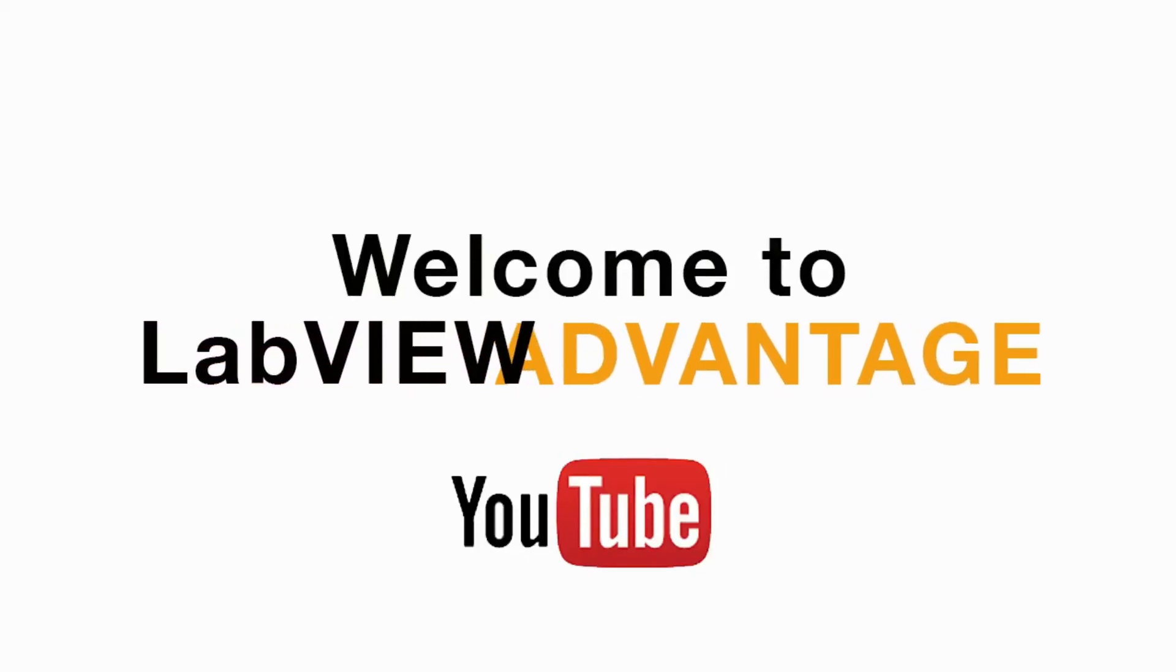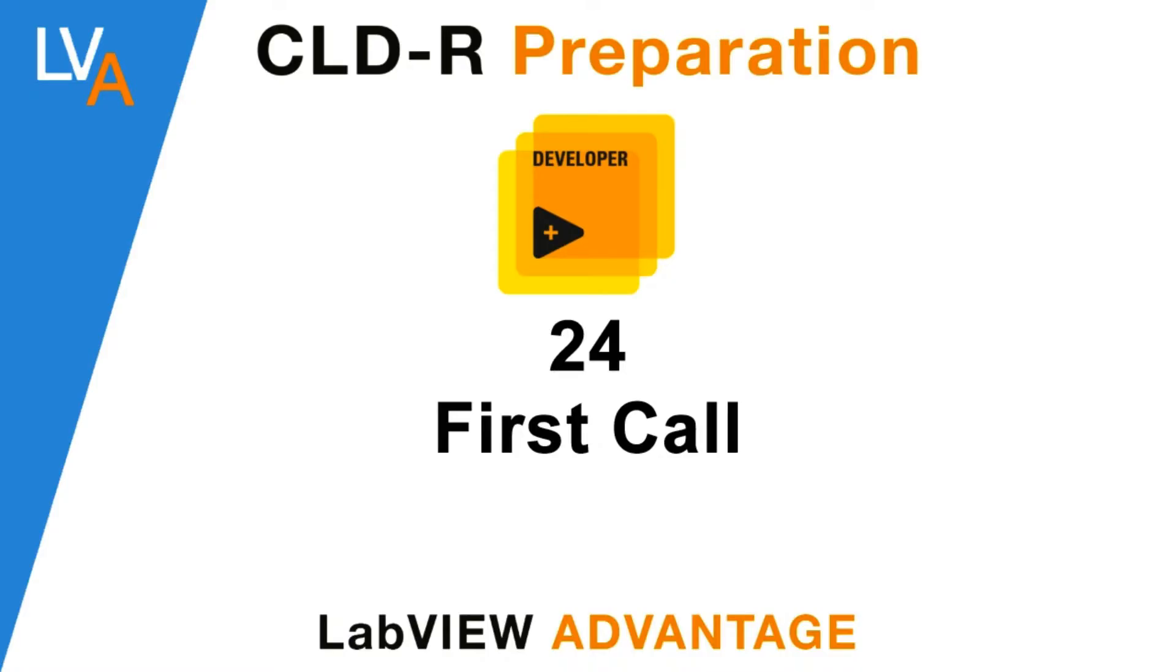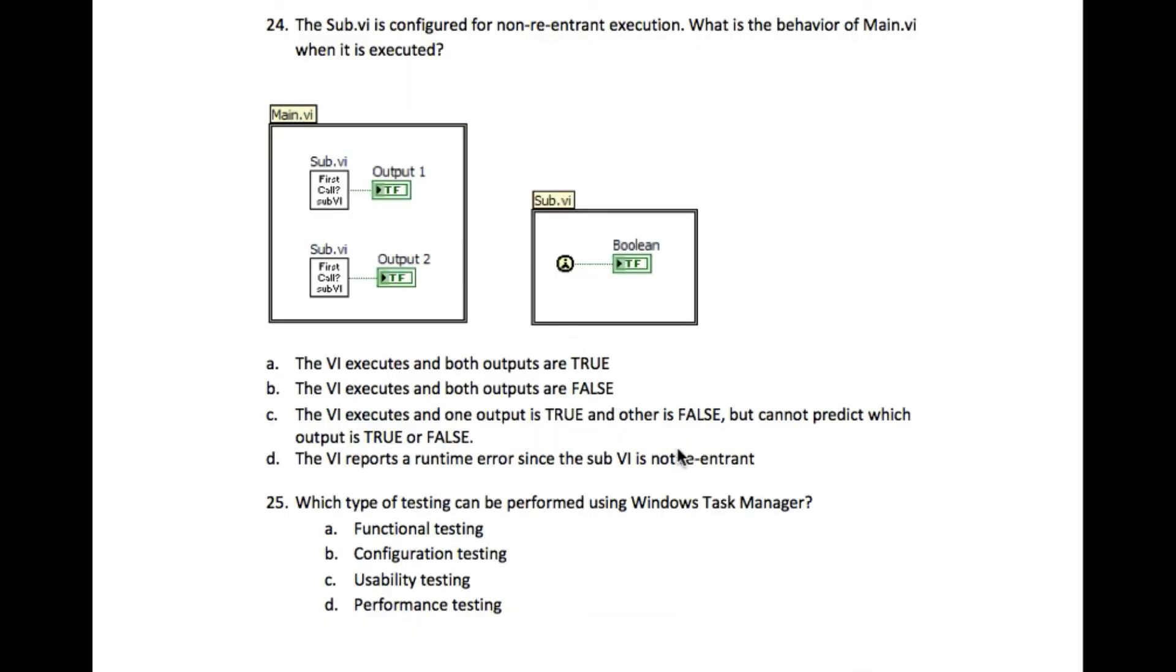Hi everyone, welcome to another CLAD preparation video on LabVIEW Advantage. Please pause the video if necessary to understand the requirements and then resume when ready. Let's begin. The question says the sub-VI is configured for non-reentrant execution. What is the behavior of main VI when it is executed?